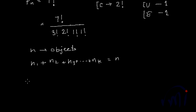Then, in that case, the total number of permutations possible will be n factorial, that is the way in which n number of objects can be arranged in n number of places, divided by n1 factorial, divided by n2 factorial, divided by n3 factorial. This will continue till nk factorial.